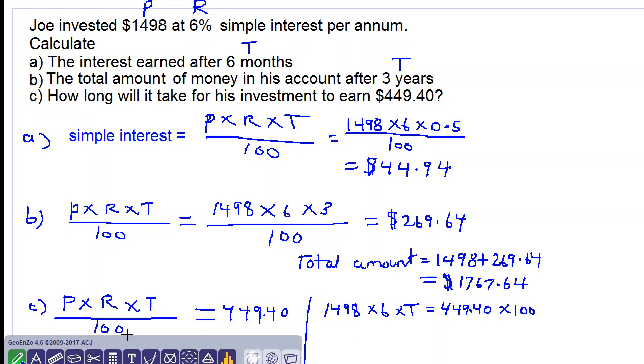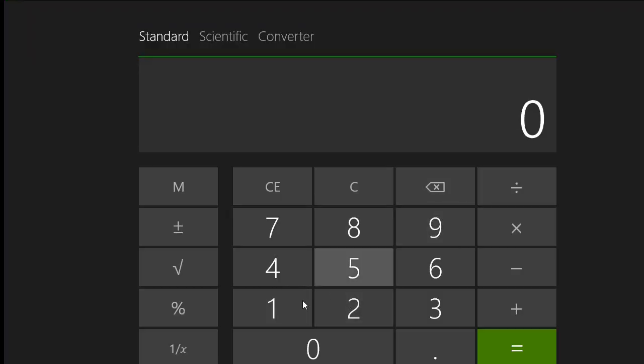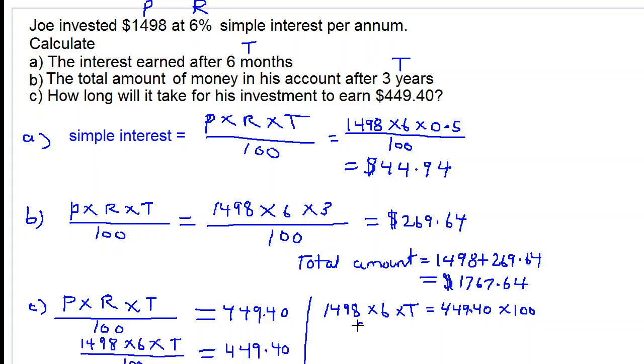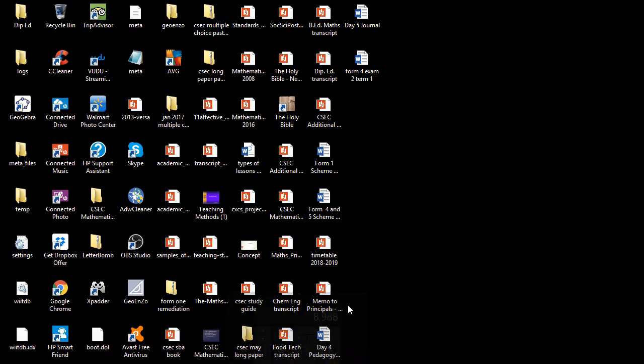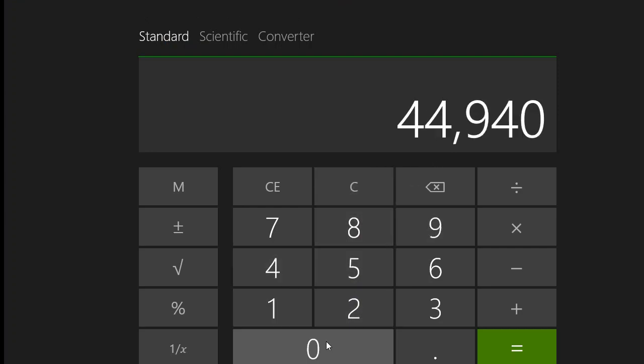Let's calculate 1498 times 6 in our calculator. So we get 8988. So we have 8988T equals 44940. Let's divide both sides by 8988. So we get 44940 divided by 8988. Let's work this out: 44940 divided by 8988, and we get 5.